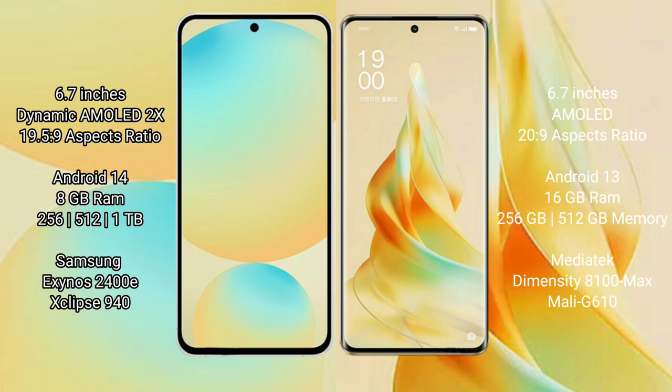The Samsung Galaxy S24 FE runs on the Android 14 operating system, while the Oppo Reno 9 Pro runs on Android 13. The Samsung Galaxy S24 FE offers 8GB RAM with 128GB, 256GB, and 512GB internal storage options.